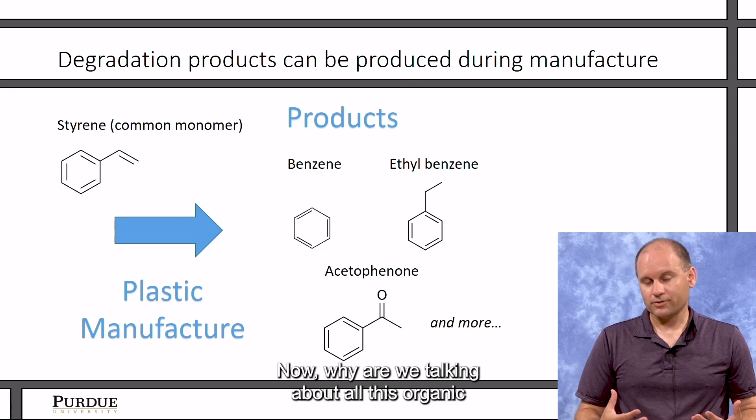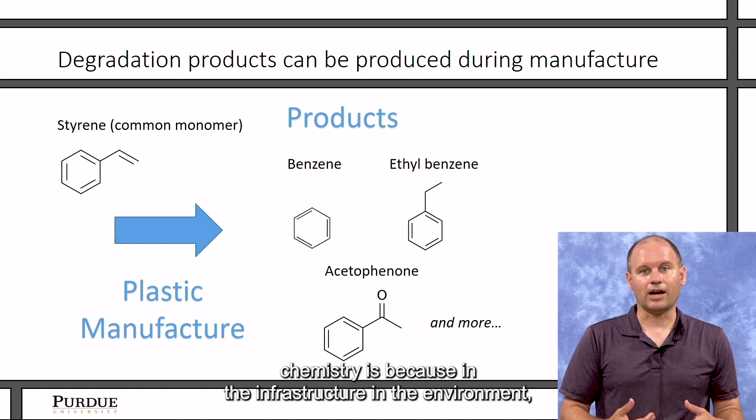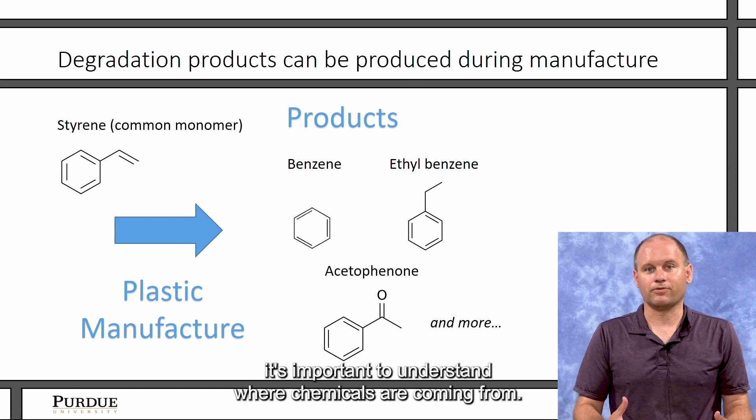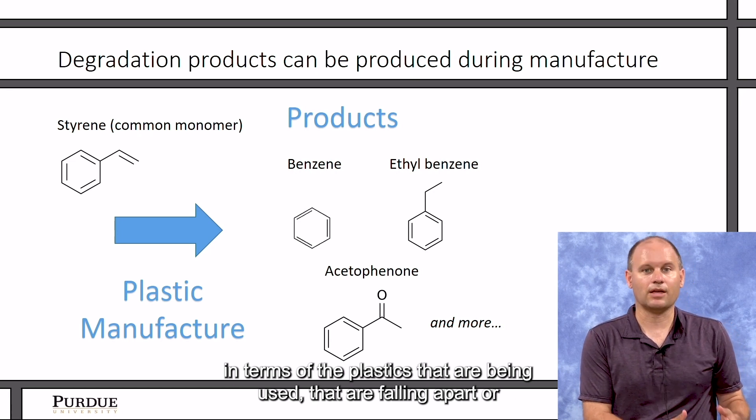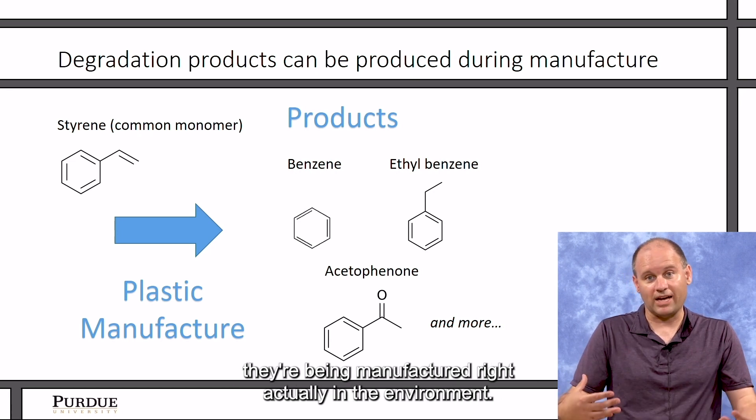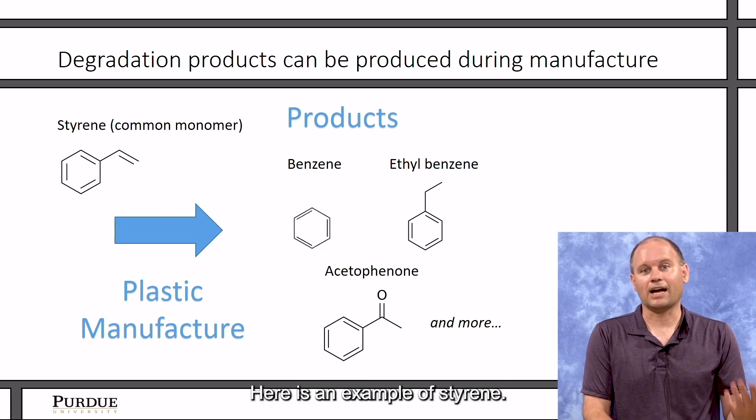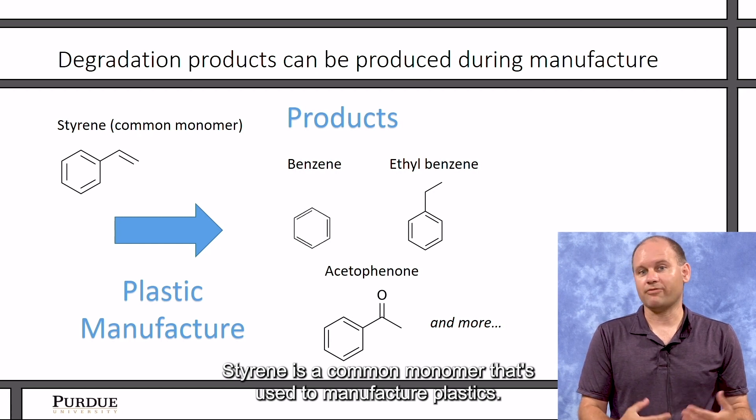Now, why are we talking about all this organic chemistry? It's because in the infrastructure and the environment, it's important to understand where chemicals are coming from in terms of the plastics that are being used, that are falling apart, or they're being manufactured right actually in the environment. Here is an example of styrene. Styrene is a common monomer that's used to manufacture plastics.